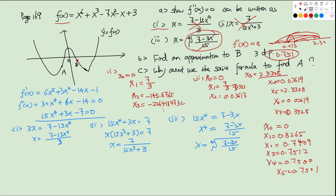For part (c), we cannot use the same third formula to find point a because the x-coordinate of a is negative. However, the fourth-root function always returns a non-negative value, so it can never approach a negative solution. That is why the third formula cannot be used to approximate point a.